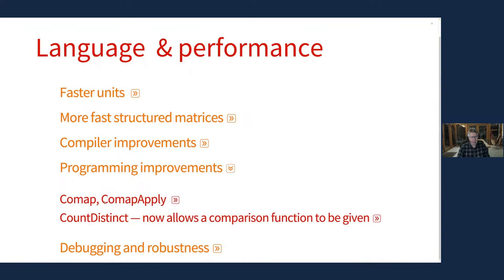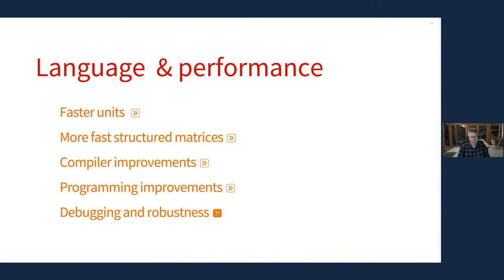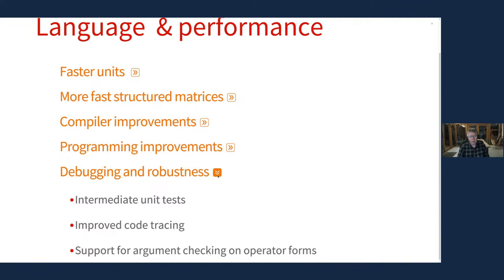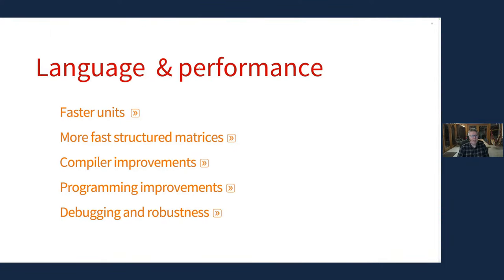There are a few things in the programming space with new commands, and a few things on debugging and robustness. You can now group unit tests together into intermediate tests. A typical problem might be testing whether a function works on a database: you need intermediate tests to set up the database, populate it with values, then check whether you can run the operation — reporting them as a single test result. There are also tools for writing more bulletproof code where argument checking, added about two or three versions ago, now works on operator forms.